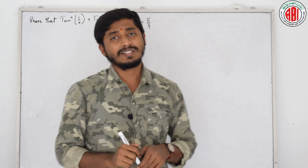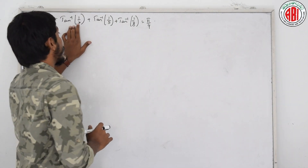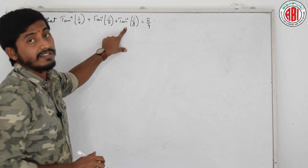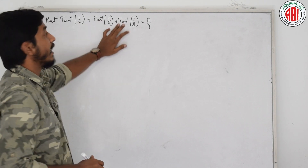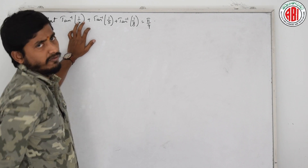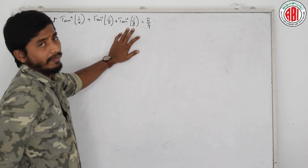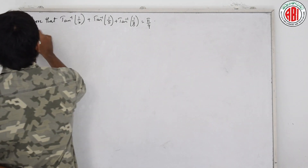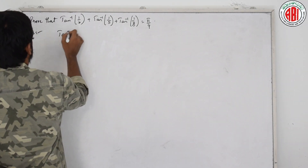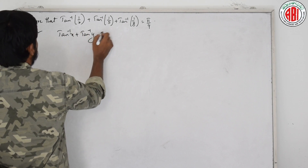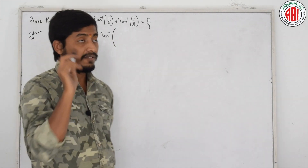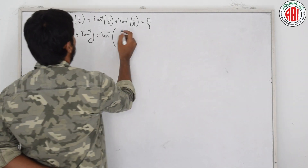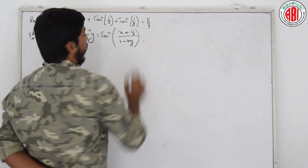Let us move on to the next problem. We need to prove that tan inverse 1 by 2 plus tan inverse 1 by 5 plus tan inverse 1 by 8 is equal to pi by 4. We have three different inverse trigonometric angles here and we do not know individual values. We will use the formula: tan inverse x plus tan inverse y equals tan inverse of x plus y by 1 minus xy. This is analogous to the tan addition formula tan a plus tan b by 1 minus tan a tan b.